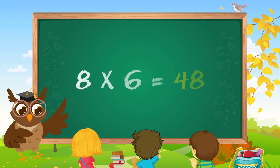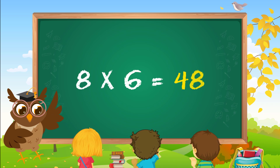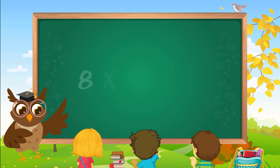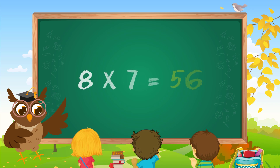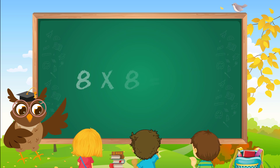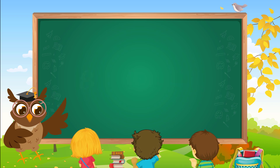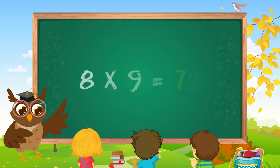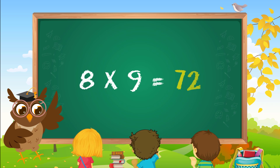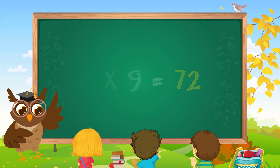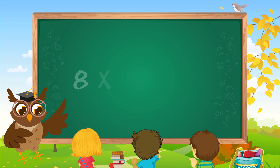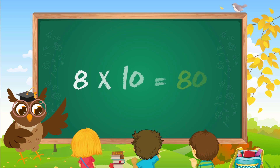Eight sixes are forty-eight. Eight sevens are fifty-six. Eight eights are sixty-four. Eight nines are seventy-two. Eight tens are eighty.